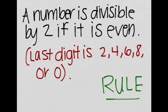So the rule for the divisibility rule by 2 states that a number is divisible by 2 if it is even. So, in other words, the last digit is 2, 4, 6, 8, or 0.